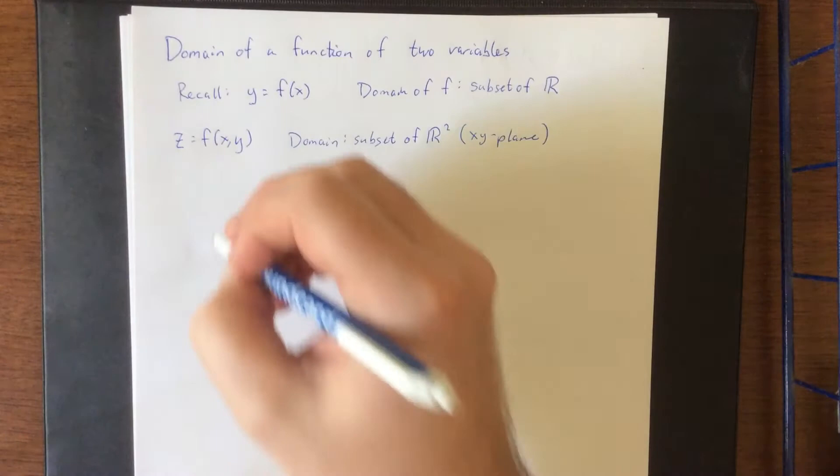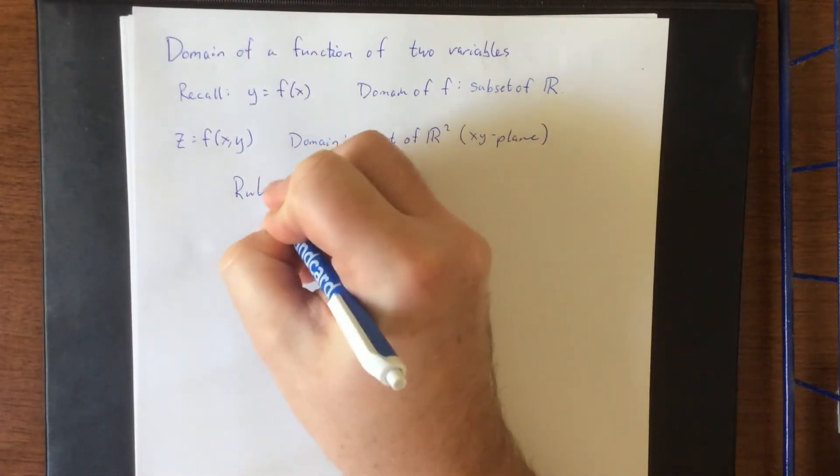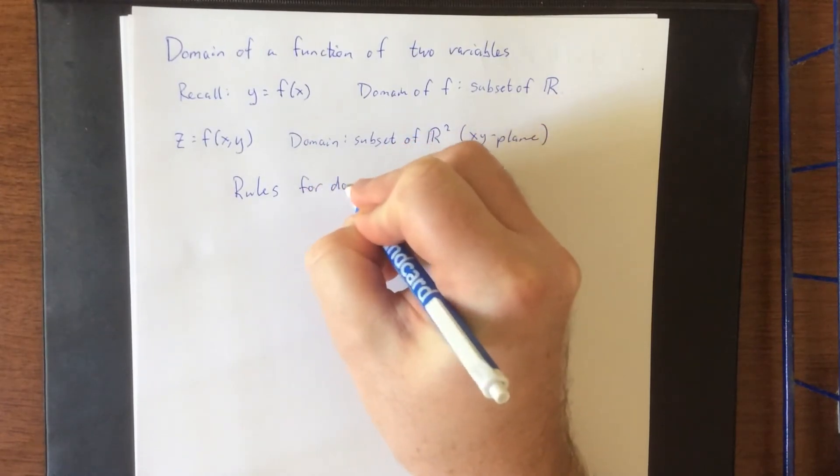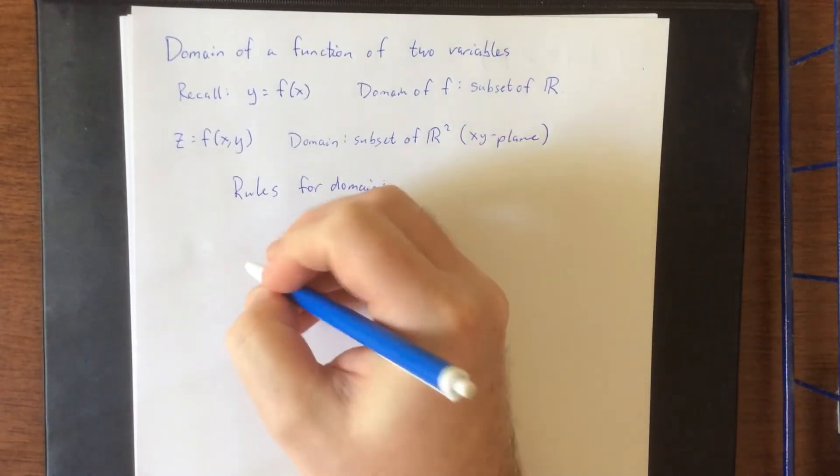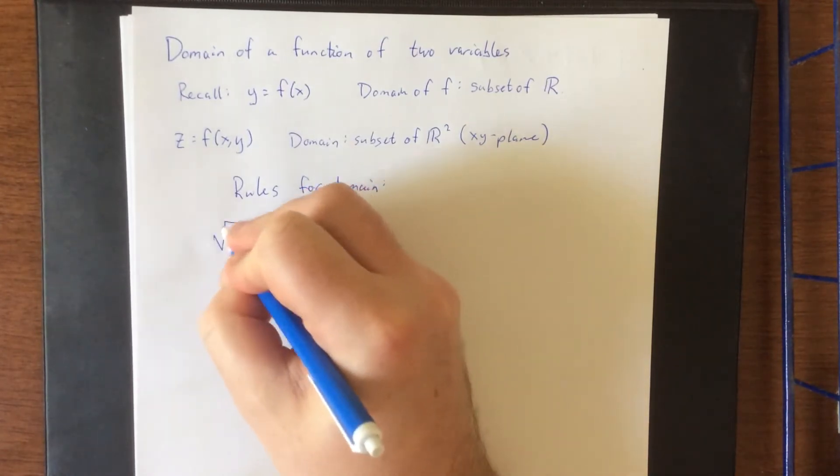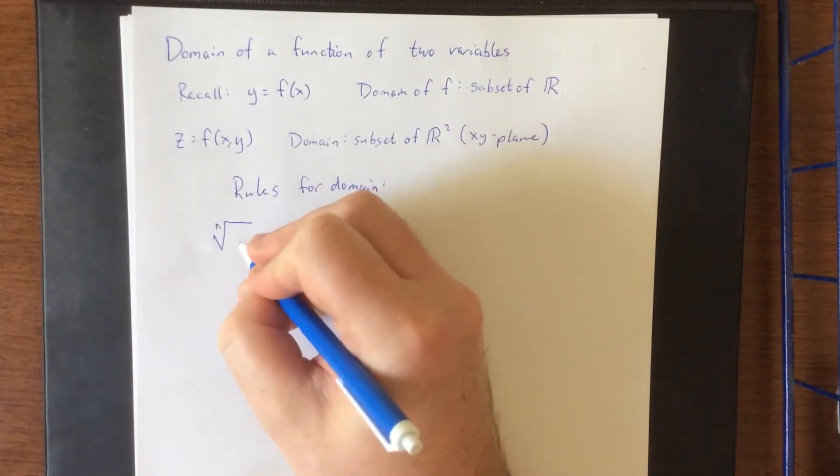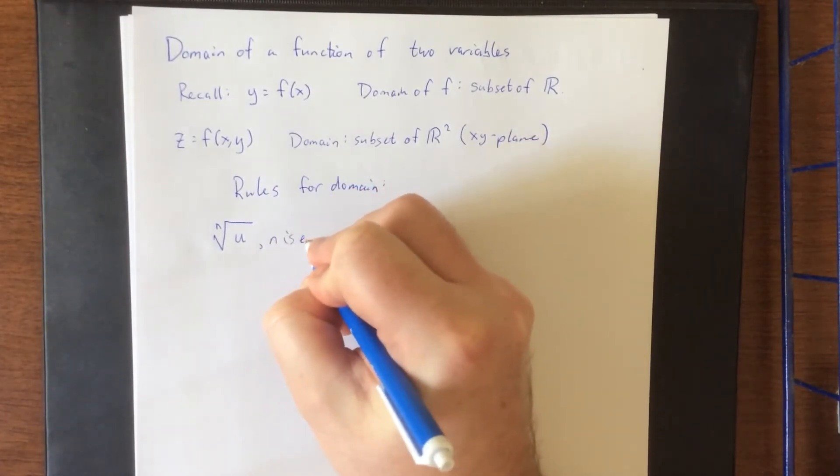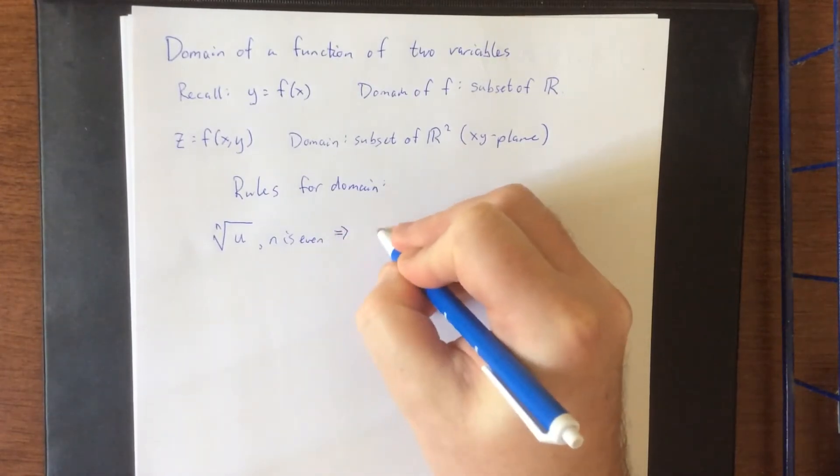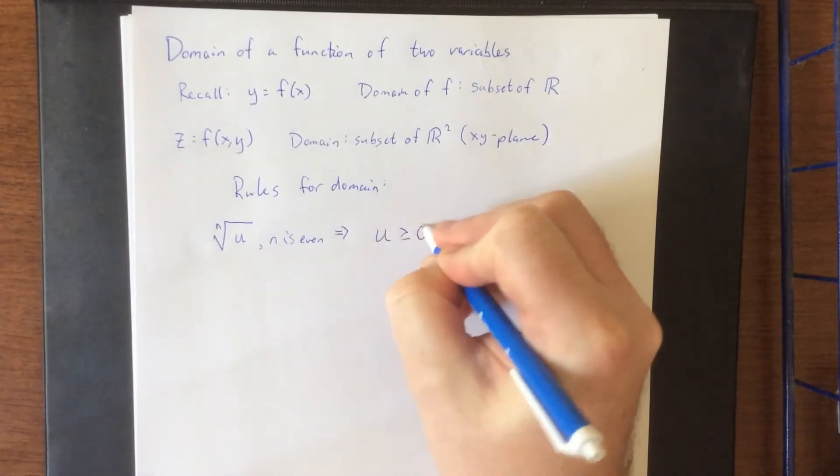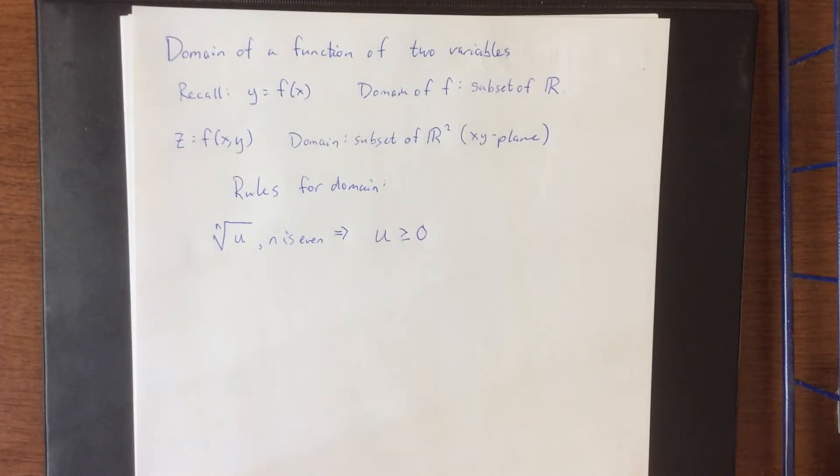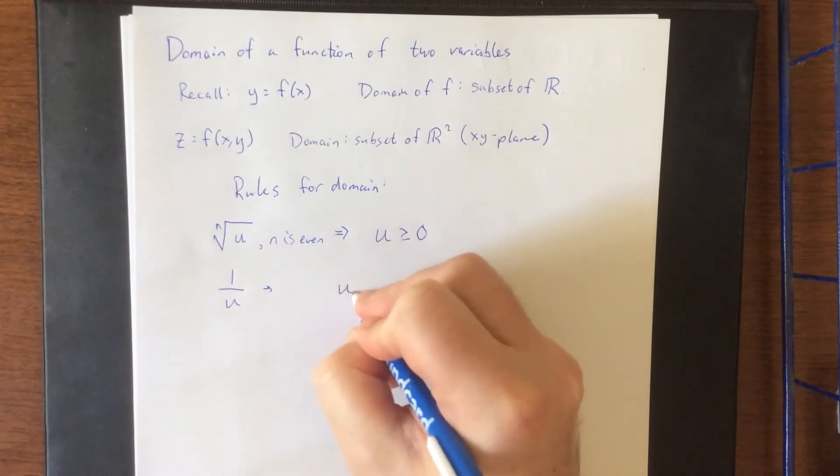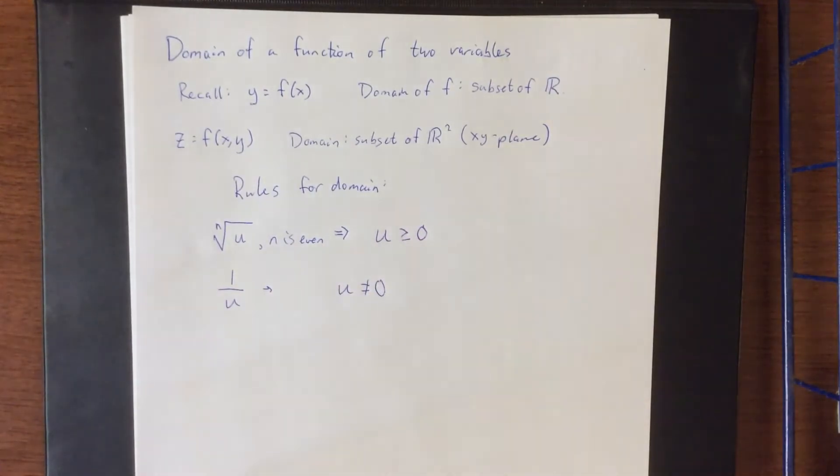Now with that in mind, all of our rules for domain from back in our old algebra classes still hold true. So rules for domain. If you have a radical with an even index, so we'll say some expression under here u, where n is even, it is necessarily true that u has to be greater than or equal to zero. If you have something involving a denominator, then it is guaranteed to be true that u is not equal to zero.